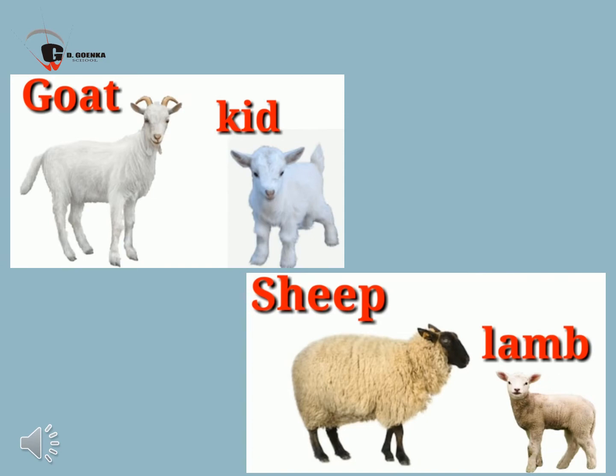Goat — Kid. The baby of a goat is kid. Goats are the first animals to be used by humans for their milk. A female goat can give birth to up to 6 babies at one time, and a kid baby can stand within a few minutes after it is born. Next is sheep — Lamb. The baby of a sheep is lamb. Lambs walk within few minutes after their birth, though they still depend on their mothers for the first 4 to 6 months.